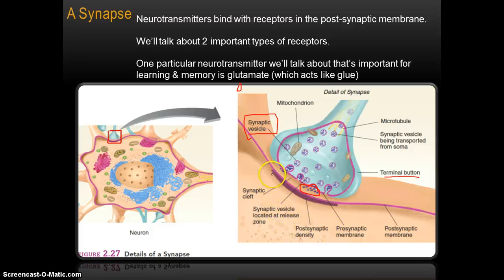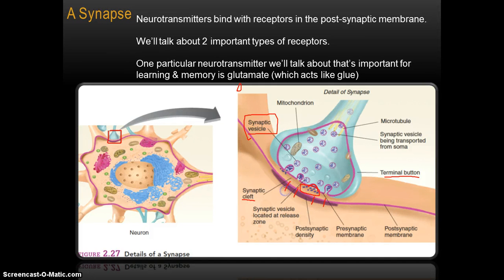There are receptors — I don't see them depicted in this picture. The synaptic cleft is just another word for synapse here. There are little receptors, sometimes called binding sites, that are embedded within the membrane of a cell. We're going to talk about at least two different types of important receptors coming up. Neurotransmitters will float around in a synapse until they possibly bind with their appropriate receptor.